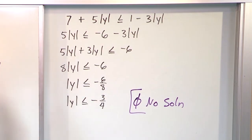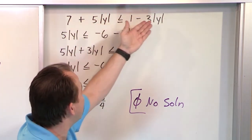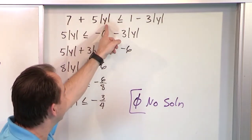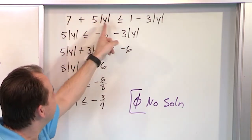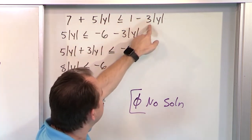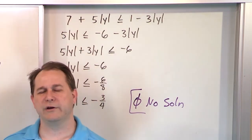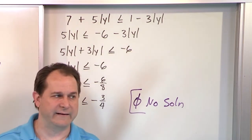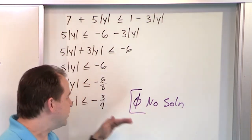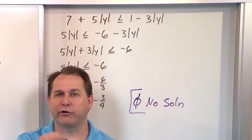There are no values of y that can satisfy this — or the original inequality. If you put 0 in, 5 times 0 is 0, 3 times 0 is 0, and you get 7 less than or equal to 1, which is false. So just by using one test point you can see that value does not satisfy the inequality. Sometimes when you get to the end you get things that can never happen. So you have to read your answers and understand what they mean before you just circle them — because sometimes the answer is no solution.